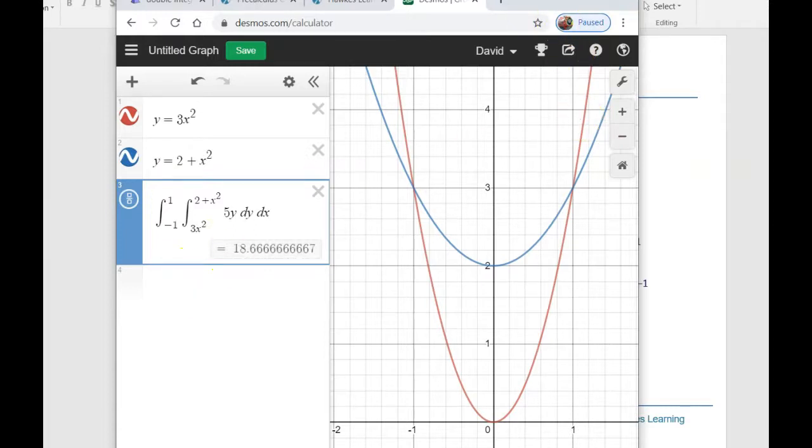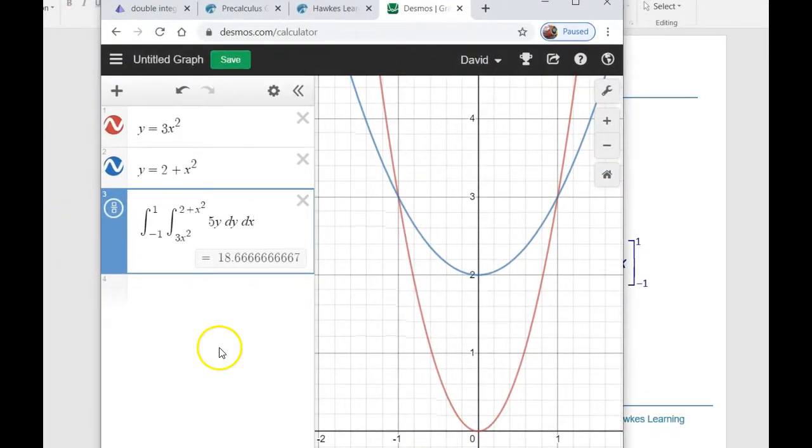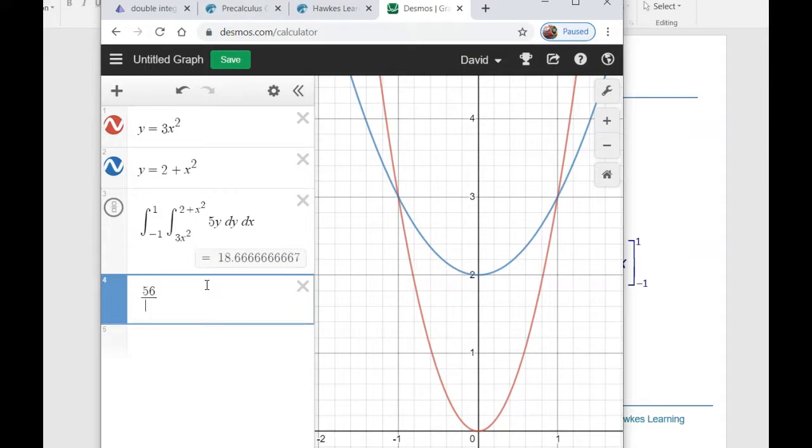If you look, I'm going to show this work in just a second, but 56 thirds is the answer. That's our value—the volume underneath the surface with those limits of integration.